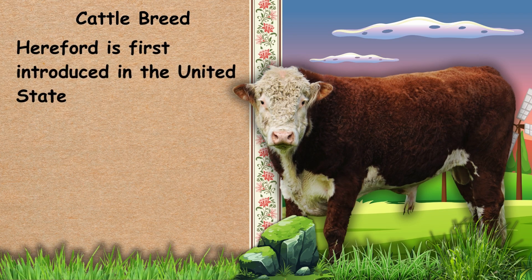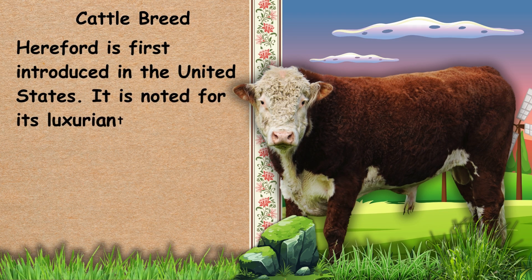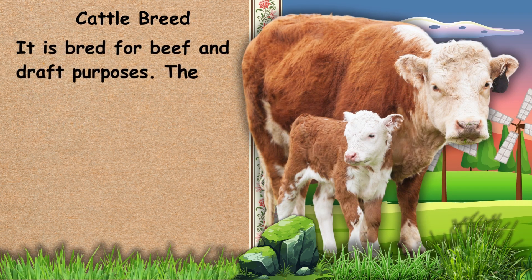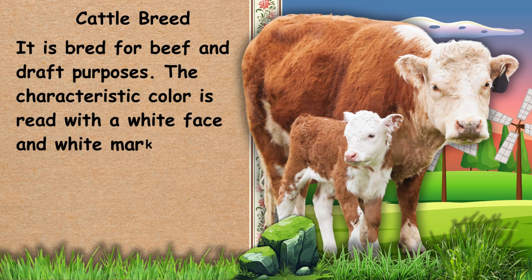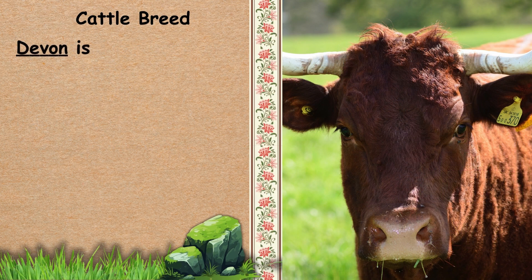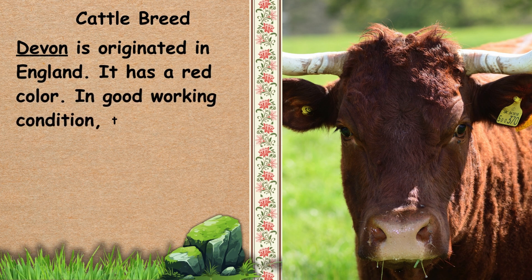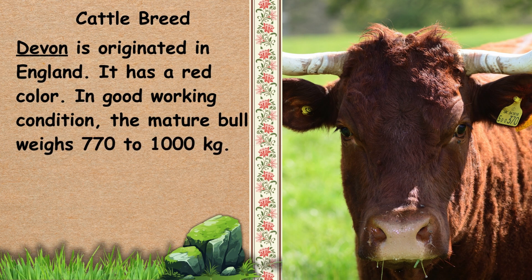Next, we have Hereford. Hereford was first introduced in the United States. It is noted for its luxuriant grasses and is bred for beef and draft purposes. The characteristic color is red with a white face and white markings. Next, we have Devon. Devon originated in England and has a red color. In good working condition, the mature bull weighs 770 to 1,000 kg.